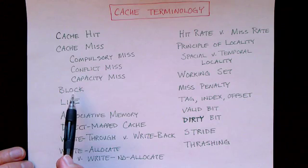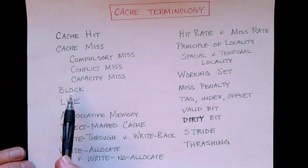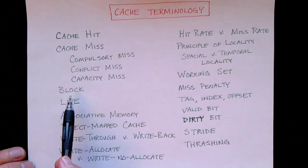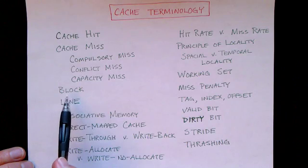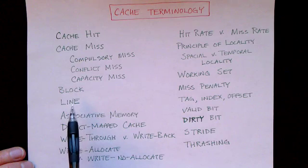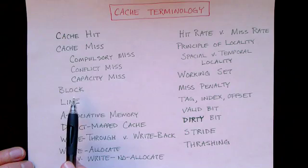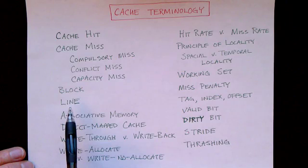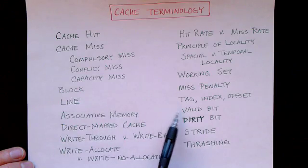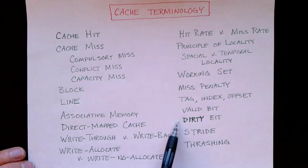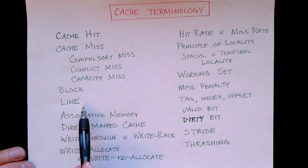The computer moves data back and forth between main memory and cache memory in units called blocks. We looked at examples where the block size was 64 bytes. The cache is made up of a number of lines, and each line stores one block. In addition, the line stores some more information, such as a tag to indicate which block it is.